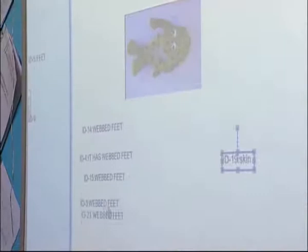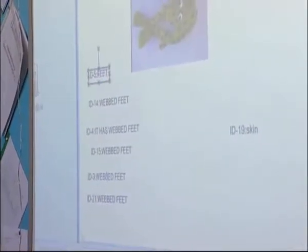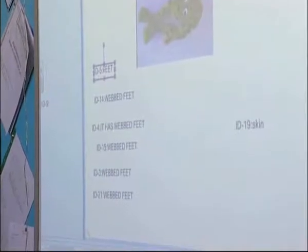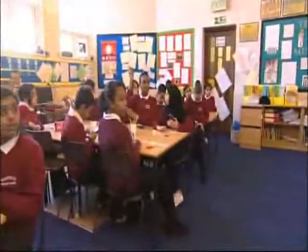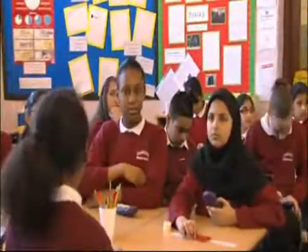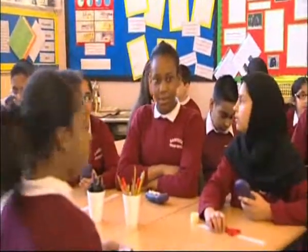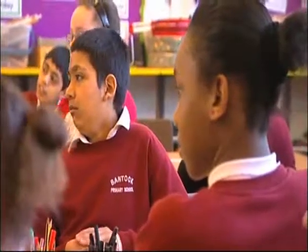Lots of responses coming in. Lots saying webbed feet. One at the moment saying camouflage. One saying skin. Most of you went for webbed feet. Who's number 15? Angela, can you explain how that animal's adapted to its habitat, what your answer is? It helps it swim. So by having webbed feet, it helps the frog swim in its habitat.